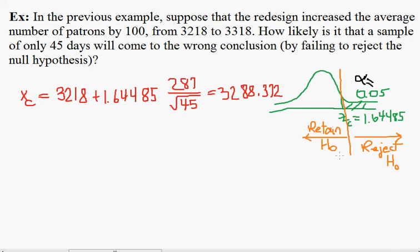In other words, if z is bigger than 1.64485, we reject the null hypothesis. Stated another way, if the sample average is bigger than 3288.372, then we reject the null hypothesis.